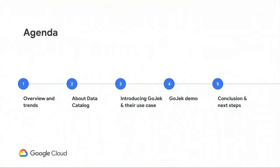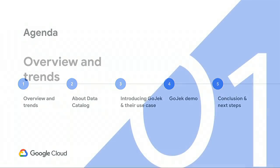Here is the agenda. We're going to do an overview and talk about the bigger trends. We'll talk about Data Catalog — the overview, the architecture, and the features in the context of overall data governance. I'll do a brief demo, then hand it over to Renata and Dimas, who will talk about their application built for Gojek and do a short demo. We hope to fit all of this in and leave some time for questions.